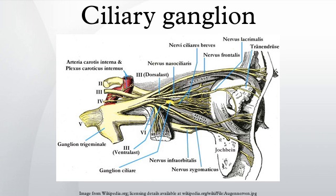In classical anatomy, the ciliary ganglion is said to have three roots: a parasympathetic root of the ciliary ganglion, a sympathetic root of the ciliary ganglion, and a sensory root of the ciliary ganglion.